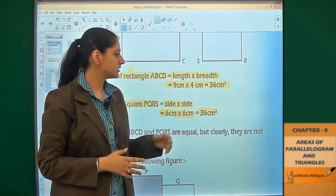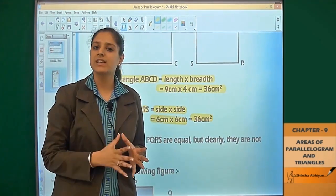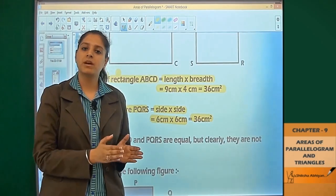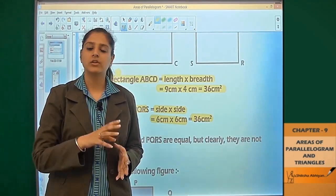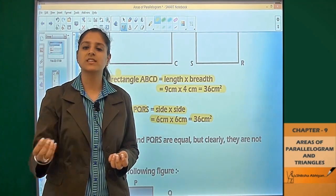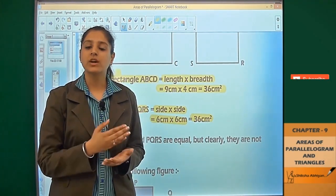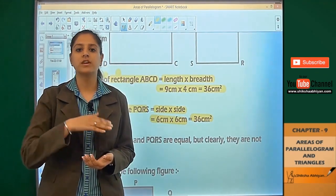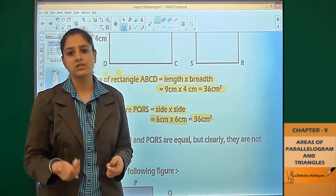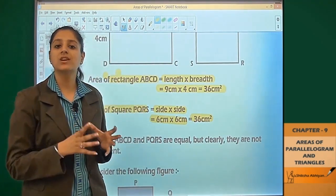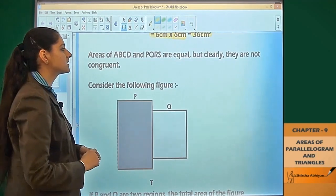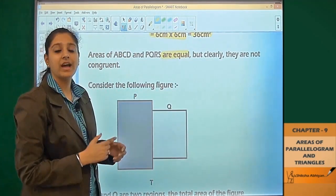You can see that the areas are equal - 36 cm squared and 36 cm squared. But the dimensions are not the same, so they are not congruent. Areas of ABCD and PQRS are equal but clearly they are not congruent.